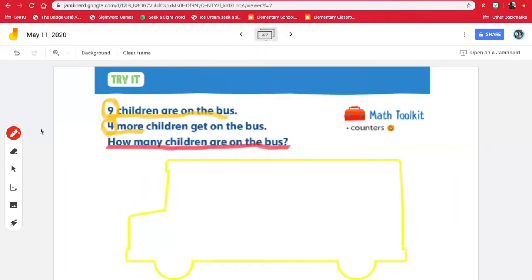So we have nine children. Let's draw the nine children in blue. So I'm going to highlight the number nine. So we have one, two, three, four, five, six, seven, eight, nine. Now we know that four more get on. So I'm going to draw the four in green. One, two, three, four.